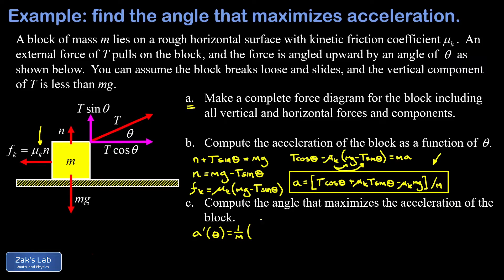Then I have plus mu_k T cos theta. The mu_k mg term differentiates to zero—that's not a function of theta. So there's the theta derivative of the acceleration, and we're going to set that equal to zero to look for the special angle where this is maximized.